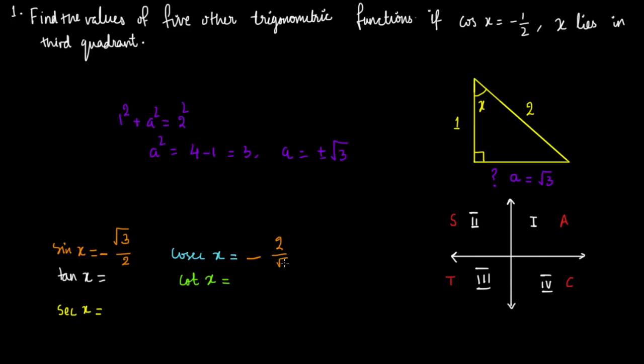Now let's come to tan x. So tan x is opposite side by adjacent side, right? So it would be root three.